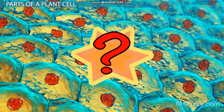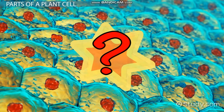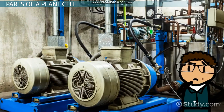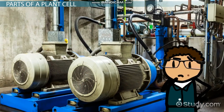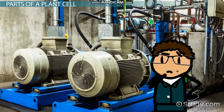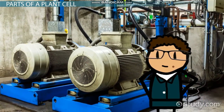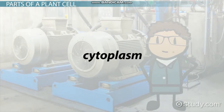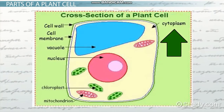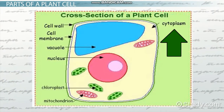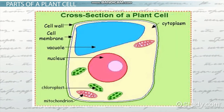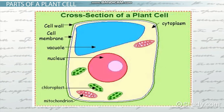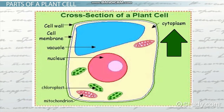What can be found inside cell walls? When you walk into a factory, you usually see a large area with lots of machines in it. That area is like the cytoplasm inside cells. Cytoplasm is a jelly-like substance that fills the plant cell where all the organelles, or parts inside the cell, can be found.